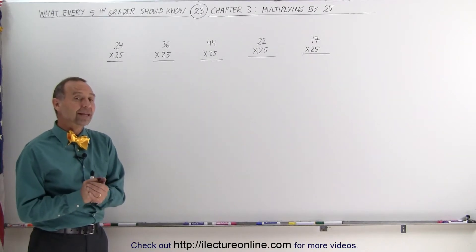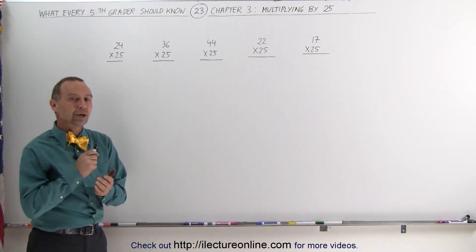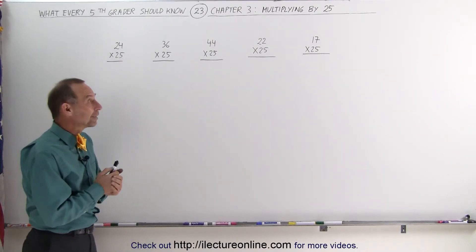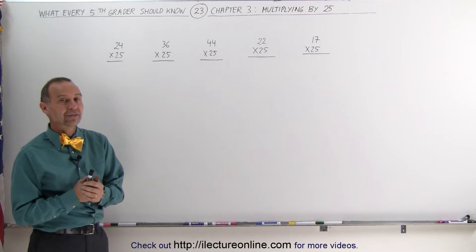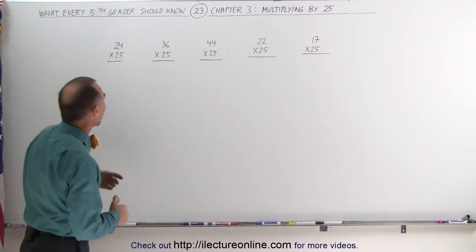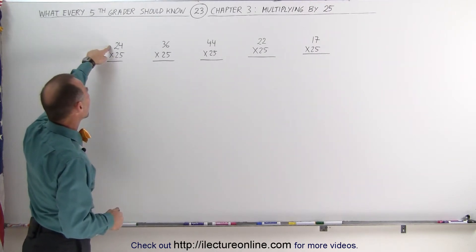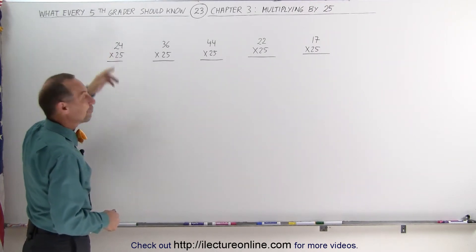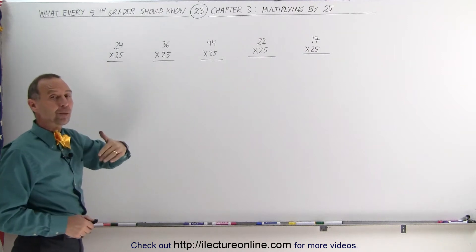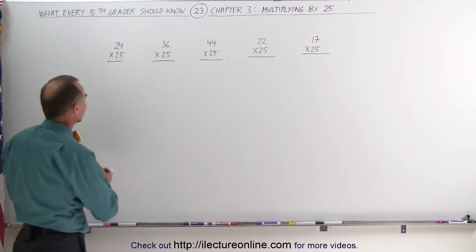Welcome to Electron Online. Now let's try to multiply a two-digit number by 25. There's a really neat little trick to that. What you do is you take the number, first divide it by 4, and then add two zeros to it.